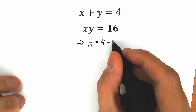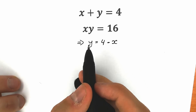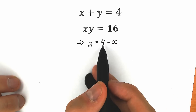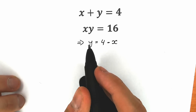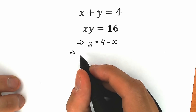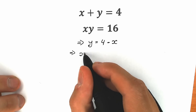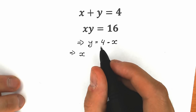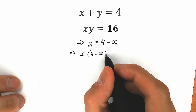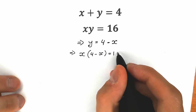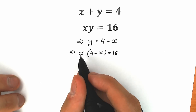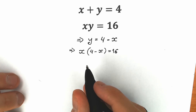So we have 4 minus x. We need to plug in this y — that is, 4 minus x — instead of y in the second equation. As a result, we have x times (4 minus x) equal to 16. Right now let's simplify this. Let's multiply out the parentheses.